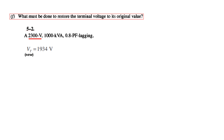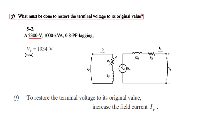Lastly, what must be done to restore the terminal voltage to its original value? The original value was 2300 volts, but with the new load it has dropped to 1934 volts. To restore, we know the generated voltage can be increased by increasing the field current IF. We can do that by adjusting the field resistor, and if that is not possible, by increasing the field supply voltage VF. I hope you have been able to follow this — let me know your comments. Thank you.